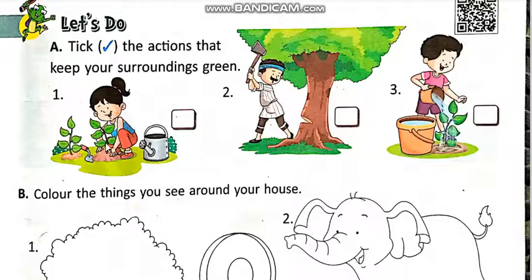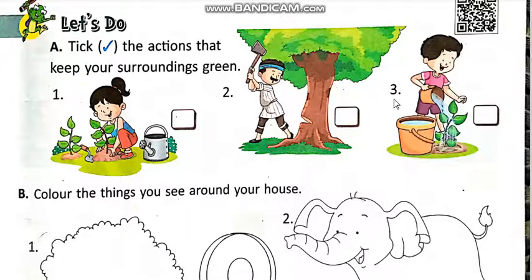This girl is planting — yeh girl is plant ko laga rahi hai. Number 2: this man is cutting this tree — yeh admi is darakht ko kaat raha hai. Number 3: the boy is watering this plant — yeh boy is plant ko paani de raha hai.